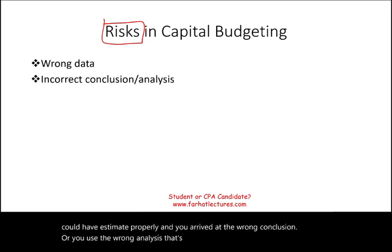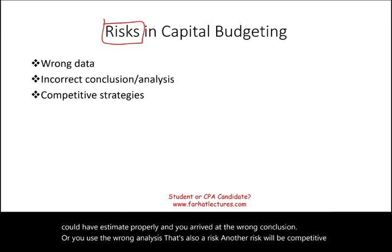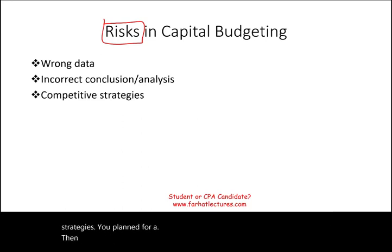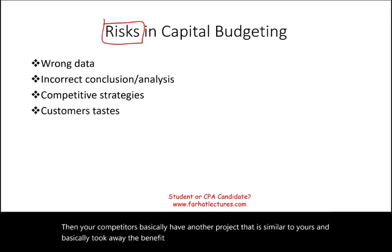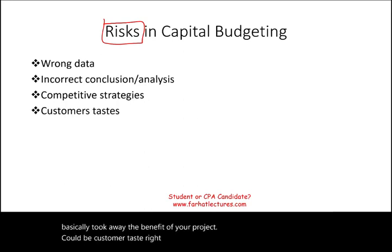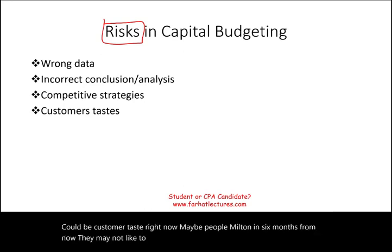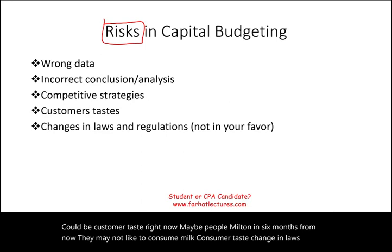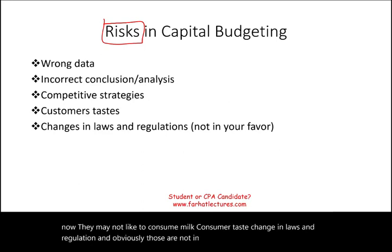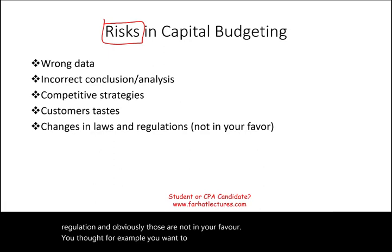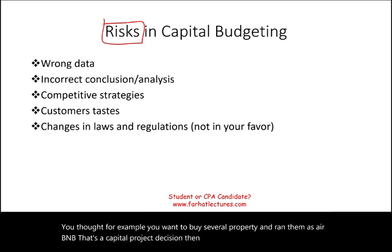Another risk will be competitive strategies — you planned for A, then your competitors have another project similar to yours and basically took away the benefit of your project. It could be customer taste: right now people like milk, and six months from now they may not like to consume milk — consumer taste. Change in laws and regulation, which are obviously not in your favor. For example, you want to buy several properties and rent them as Airbnb — that's a capital project decision — then suddenly, where you purchased those properties, laws and regulations don't allow Airbnb.